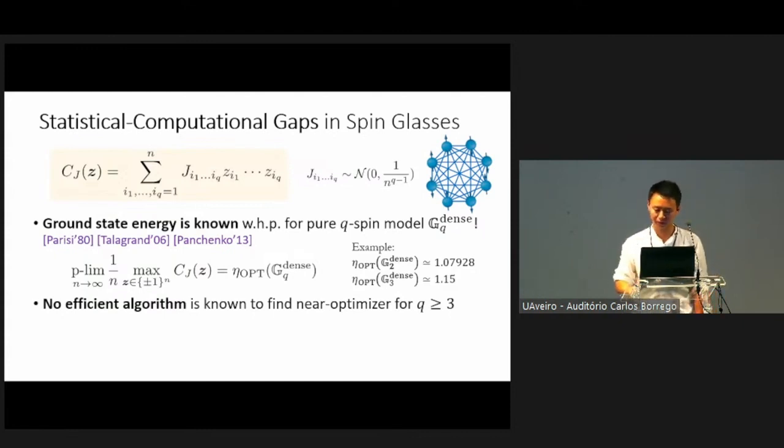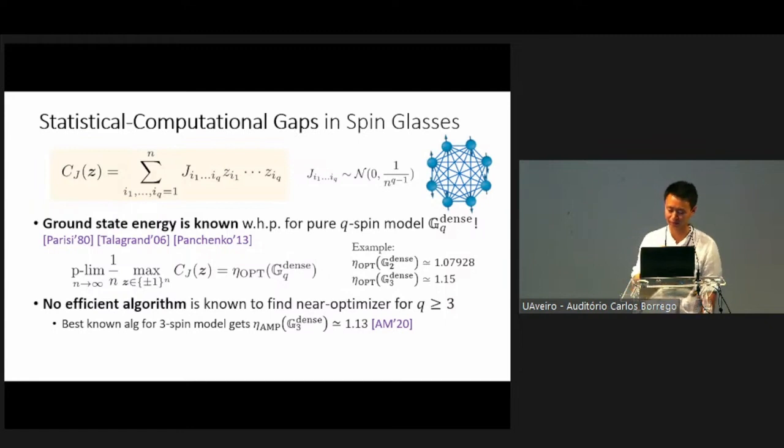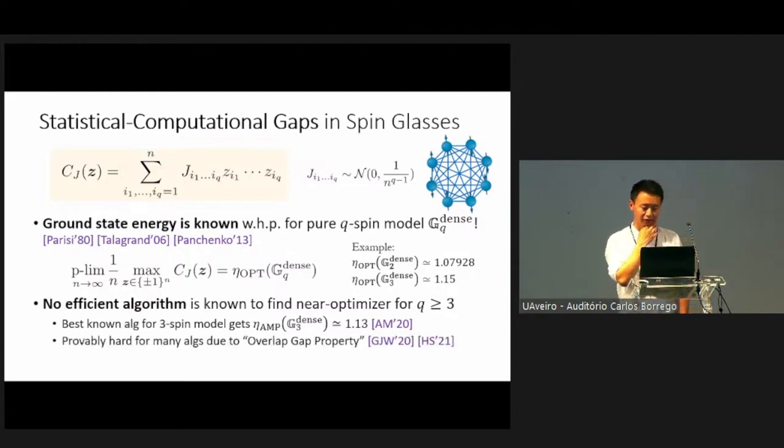For example, if you look at the two-spin model, which is the same as the Sherrington-Kirkpatrick model that I discussed before, it was known since the 80s that the energy density of the ground state converges to this 1.07928 value. Also later, it was generalized to higher spin models. For example, if you look at the three-spin model, the ground state energy is known also with high probability to converge to 1.15 in the large n limit. Even though we know the ground state energy from statistics, it turns out that to find actually a bit string that achieves that energy is actually very hard.